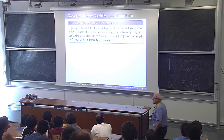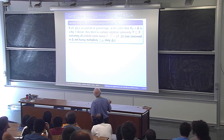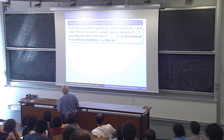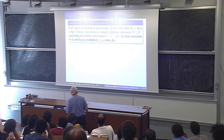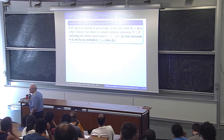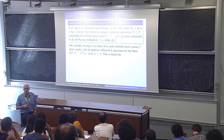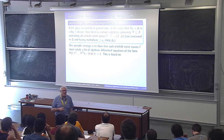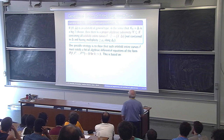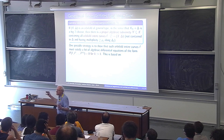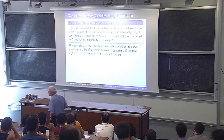The big conjecture is: if you have an orbifold of general type — meaning K_X + Δ is a big divisor — then there should be a proper algebraic subvariety Y ⊂ X containing all orbifold entire curves satisfying the multiplicity conditions. Even in the absolute case with Δ = 0, this remains a conjecture. The idea is to produce enough algebraic differential equations to eliminate derivatives and obtain algebraic equations defining Y.